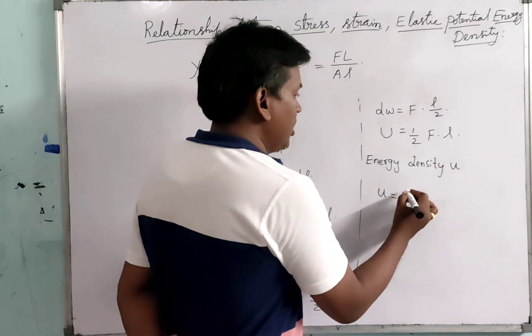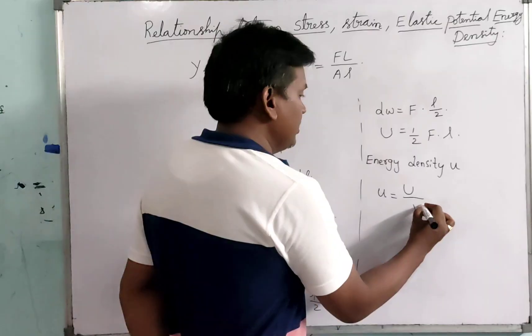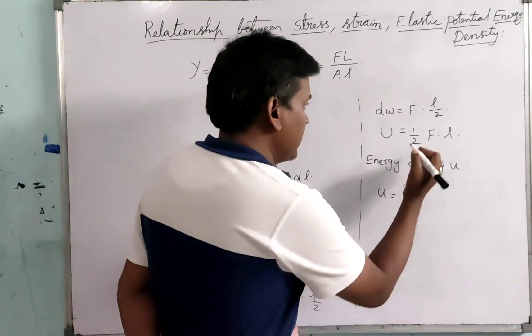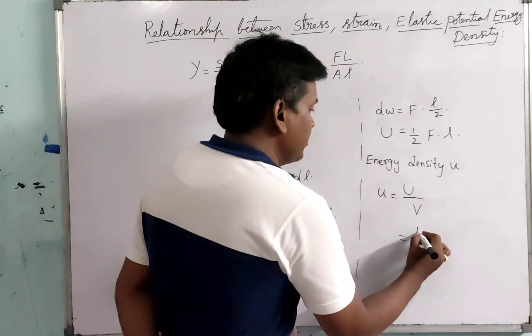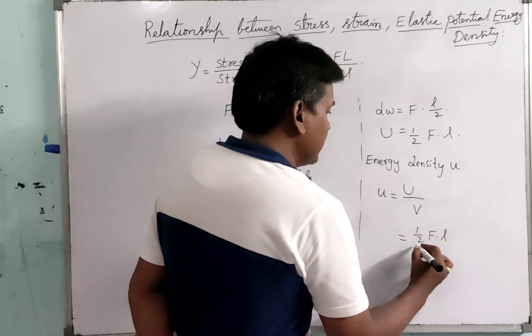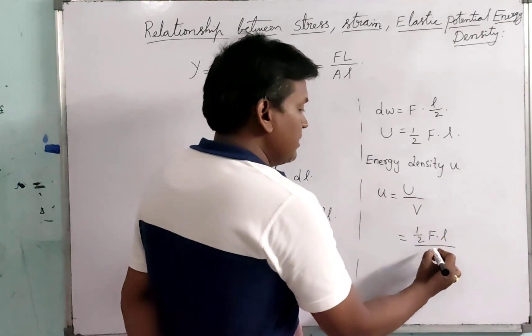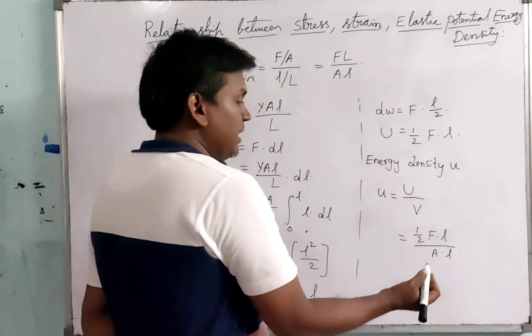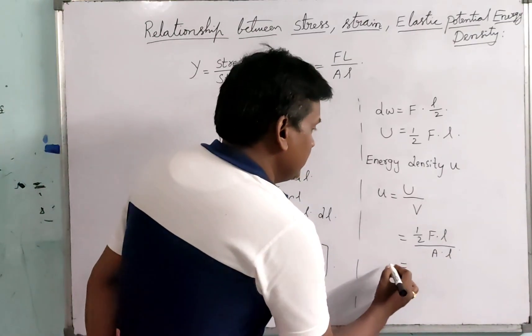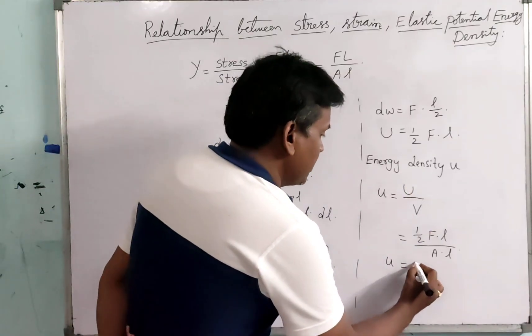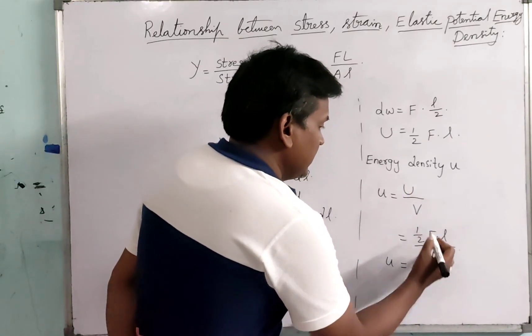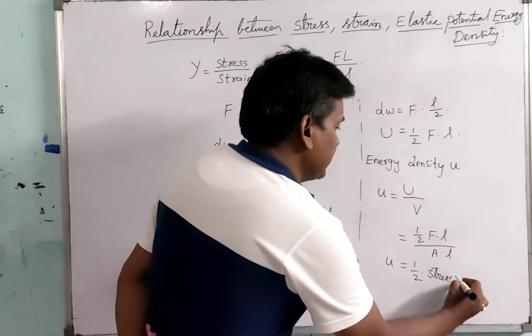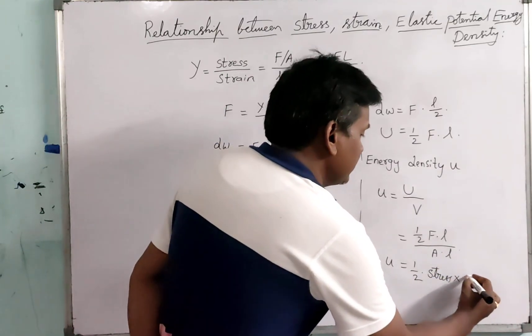Energy density small u equals capital U upon volume V. This can be written as capital U is half F dot L by volume, which can be written as area into length. The energy density u equals half F by A is stress, and L upon L is strain.